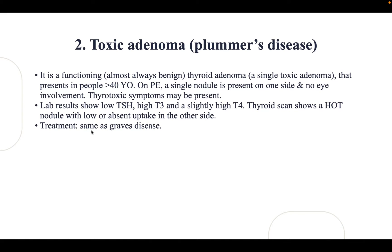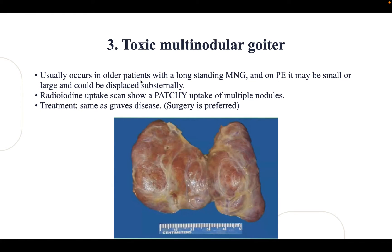Treatment of toxic adenoma is the same as Graves' disease. Toxic multinodular goiter usually occurs in older patients with a long-standing multinodular goiter. On physical examination, nodules may be either small or large and could be displaced sub-sternally. Radioiodine uptake shows a patchy pattern of multiple nodules. Treatment is the same as Graves' disease, but surgery is the preferred treatment.